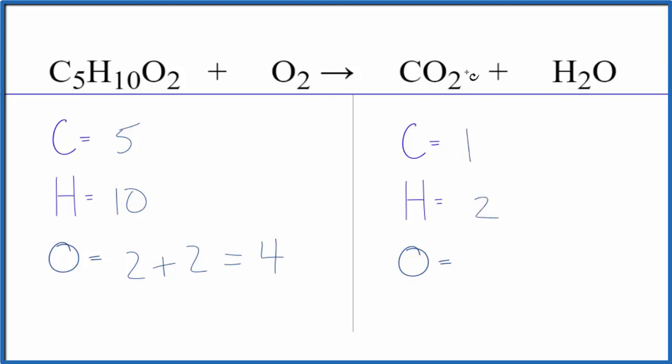So with these combustion reactions, leave the oxygens till last. That's usually a really good strategy. We can balance the carbons though. We could put a five here. One times five, that would balance the carbon atoms.